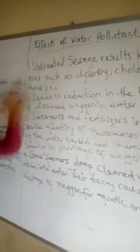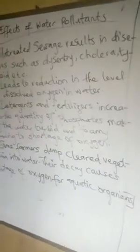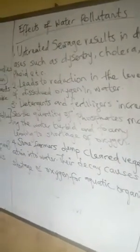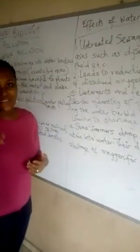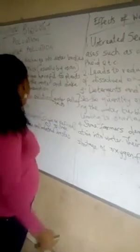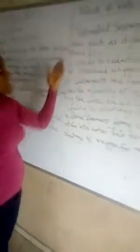Now let's look at the effects of water pollutants. Untreated sewage and waste results in diseases such as dysentery and cholera. When people drink water contaminated by sewage and waste, they stand the risk of getting all those diseases.